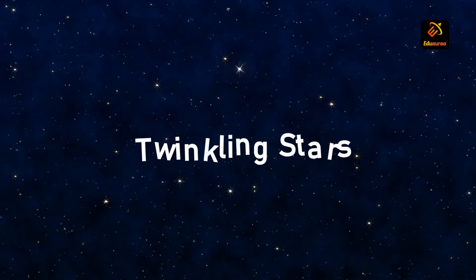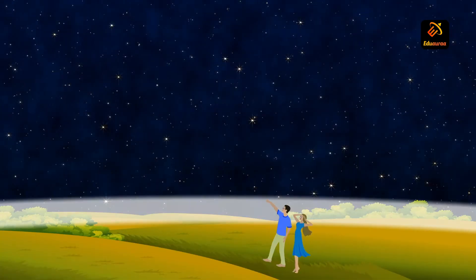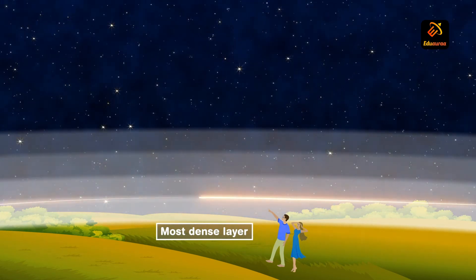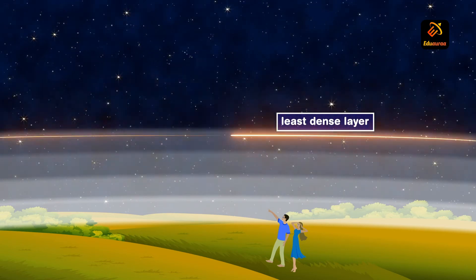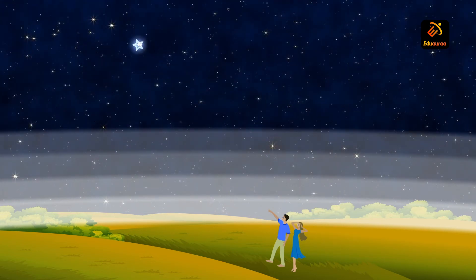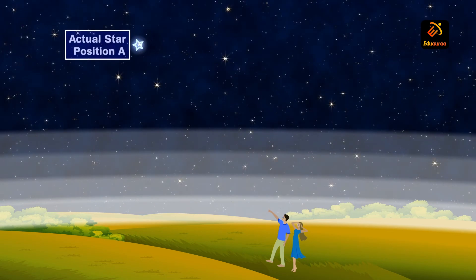Next topic is twinkling stars. The most dense layer is near the earth atmosphere and the least dense layer is the topmost layer. So as you can see in this picture, A is the true position of star.